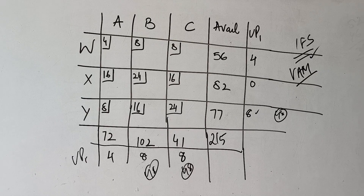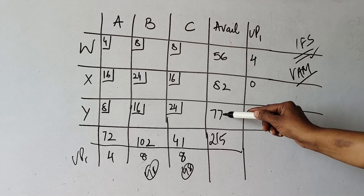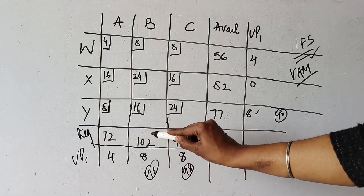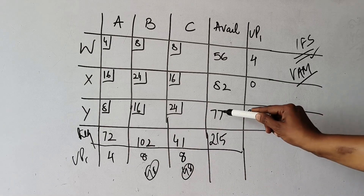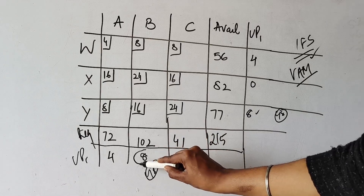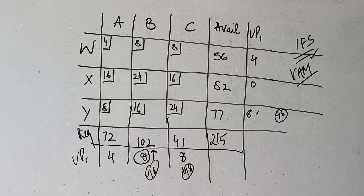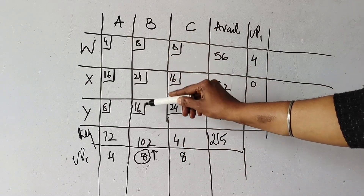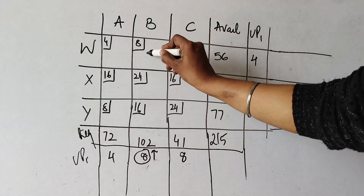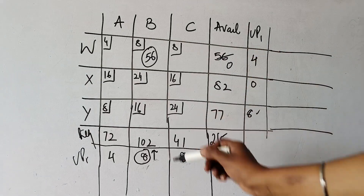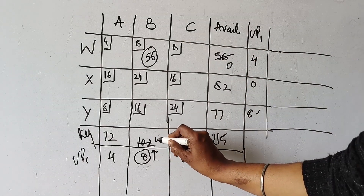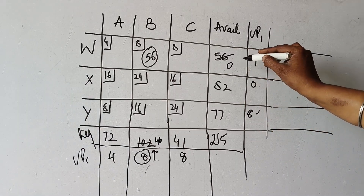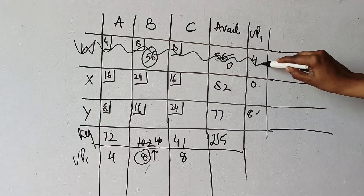To break this tie, as discussed in the previous video, we check the availability and requirement. Availability is 77. For the first 8, requirement is 41. For the second 8, requirement is 102. We see the highest value: 77, 41, 102 — of course 102 is highest. So we choose this 8. Going inside this column, minimum is 8 out of the three values. In front of this: availability 56 and requirement 102, so we allot 56. Requirement becomes 102 − 56 = 46. The row with availability 56 becomes 0 and is deleted.